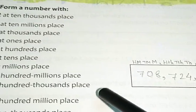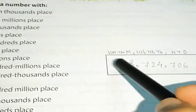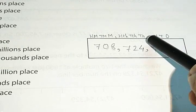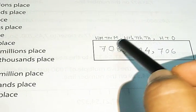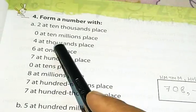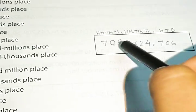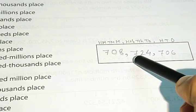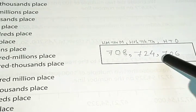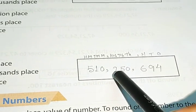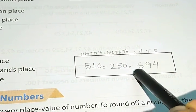Form a number with. Already, I have discussed before how do you solve it. At first, you will write the international digit place value. Like, ones, tens, hundreds, thousands, ten thousands, hundred thousands. Again, million, ten million, and hundred million. So, at first, write the international place value chart. Then, put the number at their proper place. So, the answer will be 708,708,724,706. And the last one is, answer will be 510,250,694.